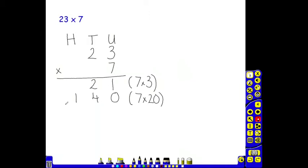I then need to add these two sections together. So I have a final answer of 1 in the units. 2 and 4 tens makes 6 tens and 100 gives 100. So 23 multiplied by 7 is 161.